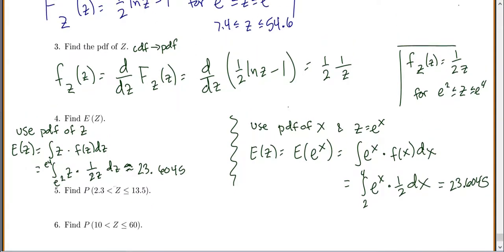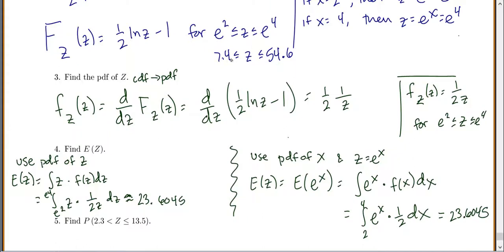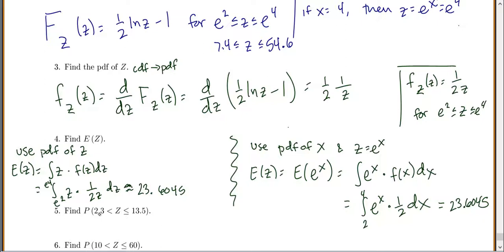So you better go back up and look at the actual bounds of z. So z is good from 7.4 to 54.6. So can I find it from 2.3 to 13.5?